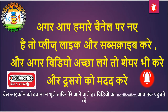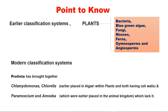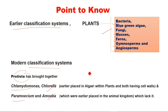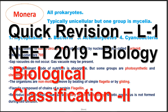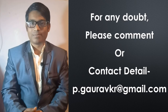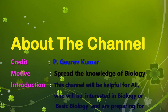If you haven't subscribed to our channel, please subscribe, like, and support. Please don't forget to press the bell icon. In modern classification, examples of unicellular eukaryotes in Protista include Chlamydomonas, Paramecium, Amoeba, and Chlorella — all of these are unicellular and eukaryotic.